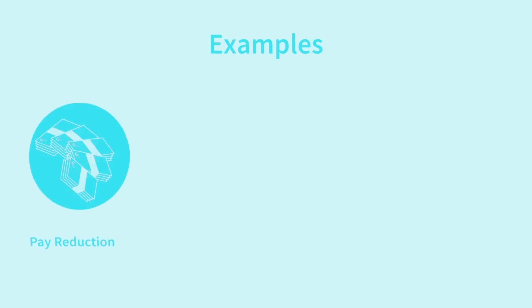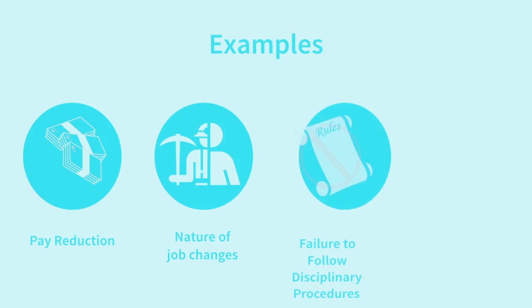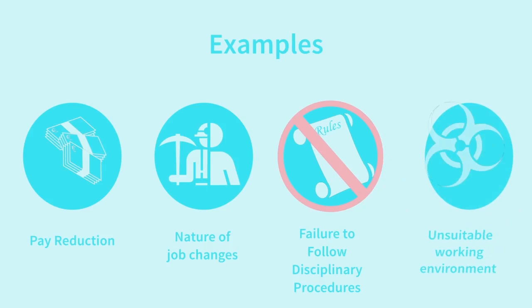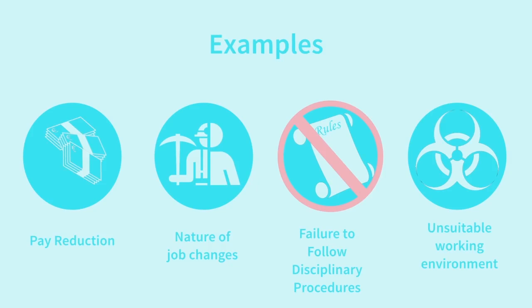Examples of breaches of contract that have led to claims of constructive dismissal include: reduction in pay, complete change in the nature of the job, failure to follow prescribed disciplinary procedures, and failure to provide a suitable working environment. See the case of Western Excavating Limited v. Sharp for a practical example of this issue.